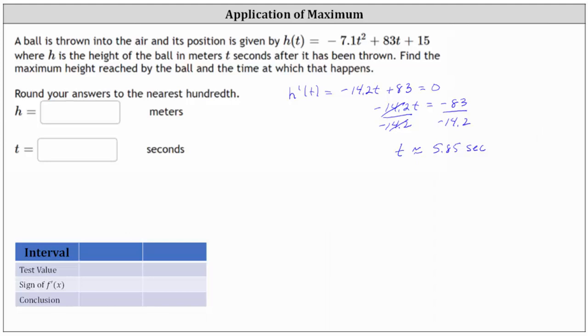Now one thing about the interval, we know that time can never be negative. So the first interval will be the interval from zero to 5.85. We'll include zero and we don't include 5.85. The second sub interval is going to be from 5.85 to infinity.